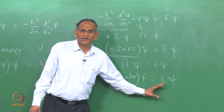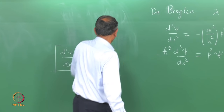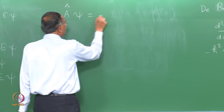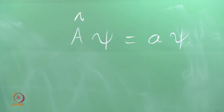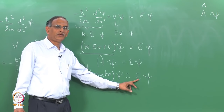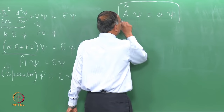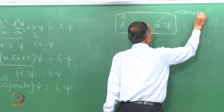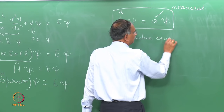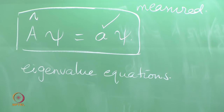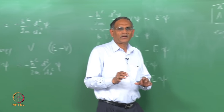The Hamiltonian operator acting on psi gives a constant times psi. The Schrödinger equation is a very specific equation for the Hamiltonian operator, and such equations in mathematics are known as eigenvalue equations. For any operator A acting on psi giving some constant times psi — the constant must have the same dimension as the operator A, just as E has energy dimensions for the Hamiltonian. The time-independent Schrödinger equation is the eigenvalue equation for the Hamiltonian, or energy operator.